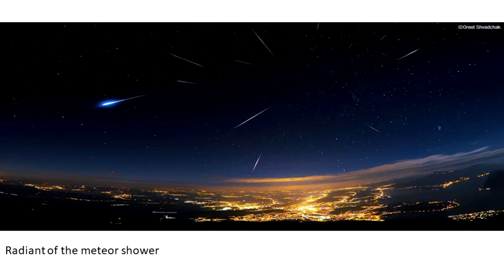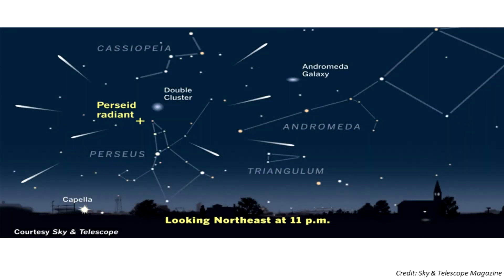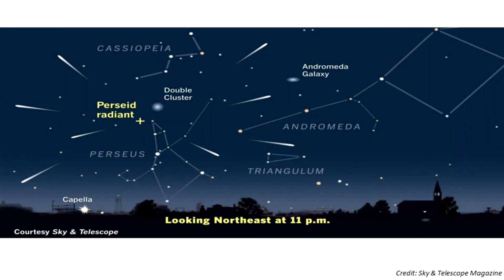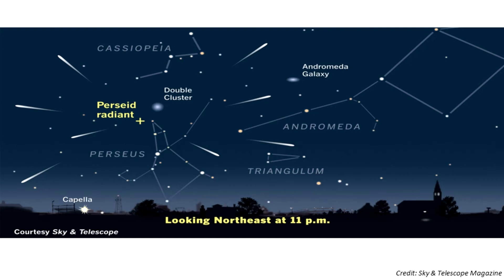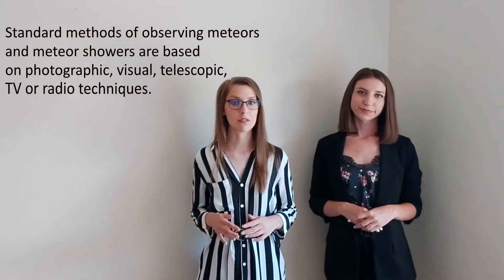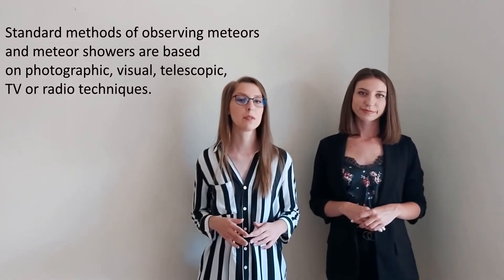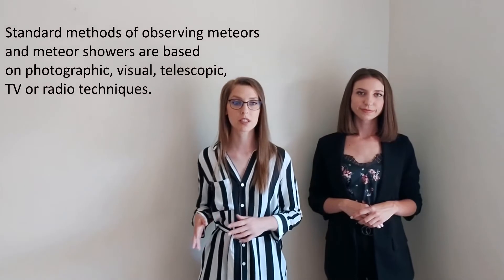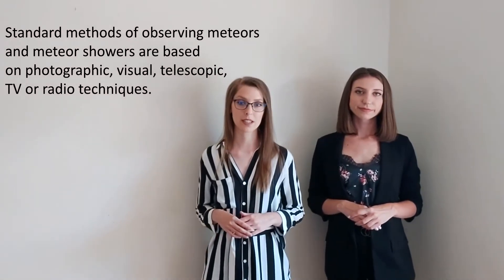Each shower is named after the constellation in which its radiant is located. So, for example, there is a meteor shower of Perseids named after the constellation Perseus, a shower of Leonids named after the constellation Leo, and so on. Different observational methods are capable of getting various data on meteorites and their interaction with the atmosphere. Standard methods of observing meteors and meteor showers are based on photographic, visual, telescopic, TV, or radio techniques.